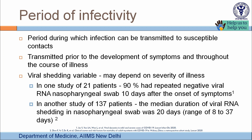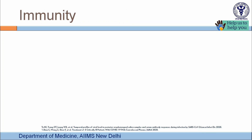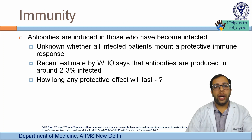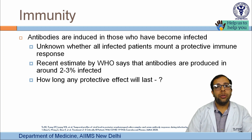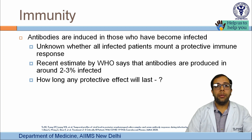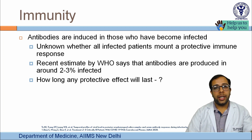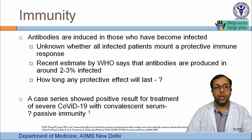Regarding immunity: when a person is infected, an immune response is mounted against the virus. Antibodies have been detected in COVID-19 patients. A recent WHO estimate showed that only about 2 to 3% of infected individuals develop an appropriate immune response with detectable antibodies. How protective these antibodies are and how long protection lasts still needs to be explored.